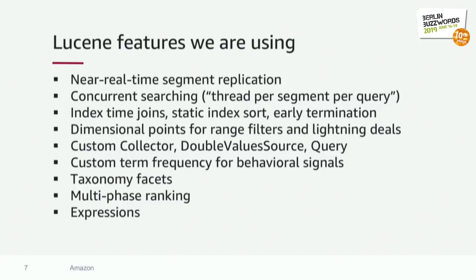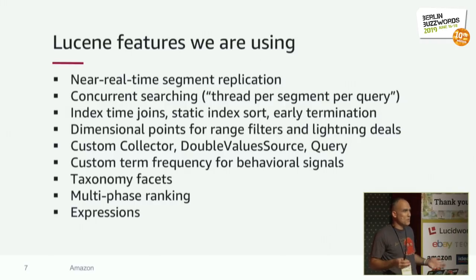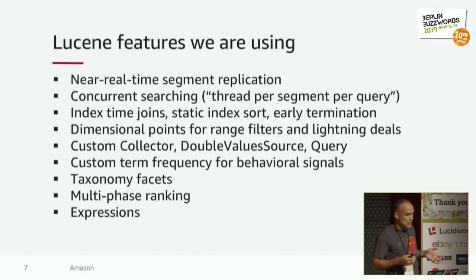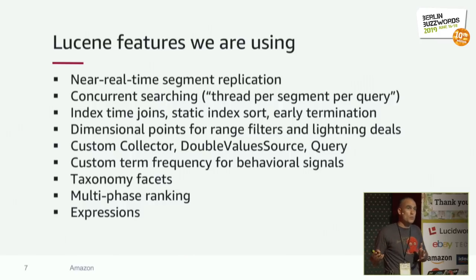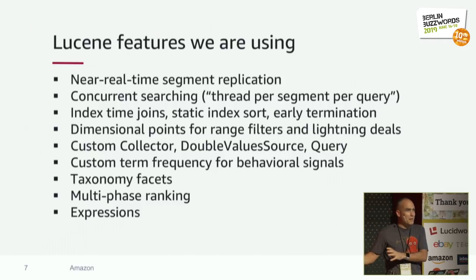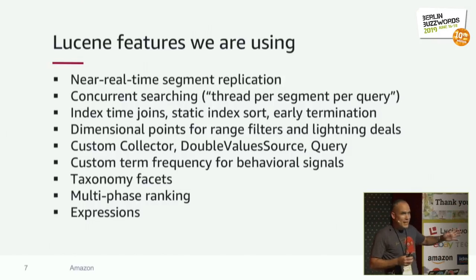In building our search application on Lucene, we're using a huge number of its features. We use near-real-time segment replication to distribute the index across many replicas — different from how Elasticsearch and Solr work today. We use concurrent searching so multiple threads answer a single query. We use index sorting by product quality to enable early termination on difficult queries. We use index-time joins to handle offer information, since every product has multiple offers.